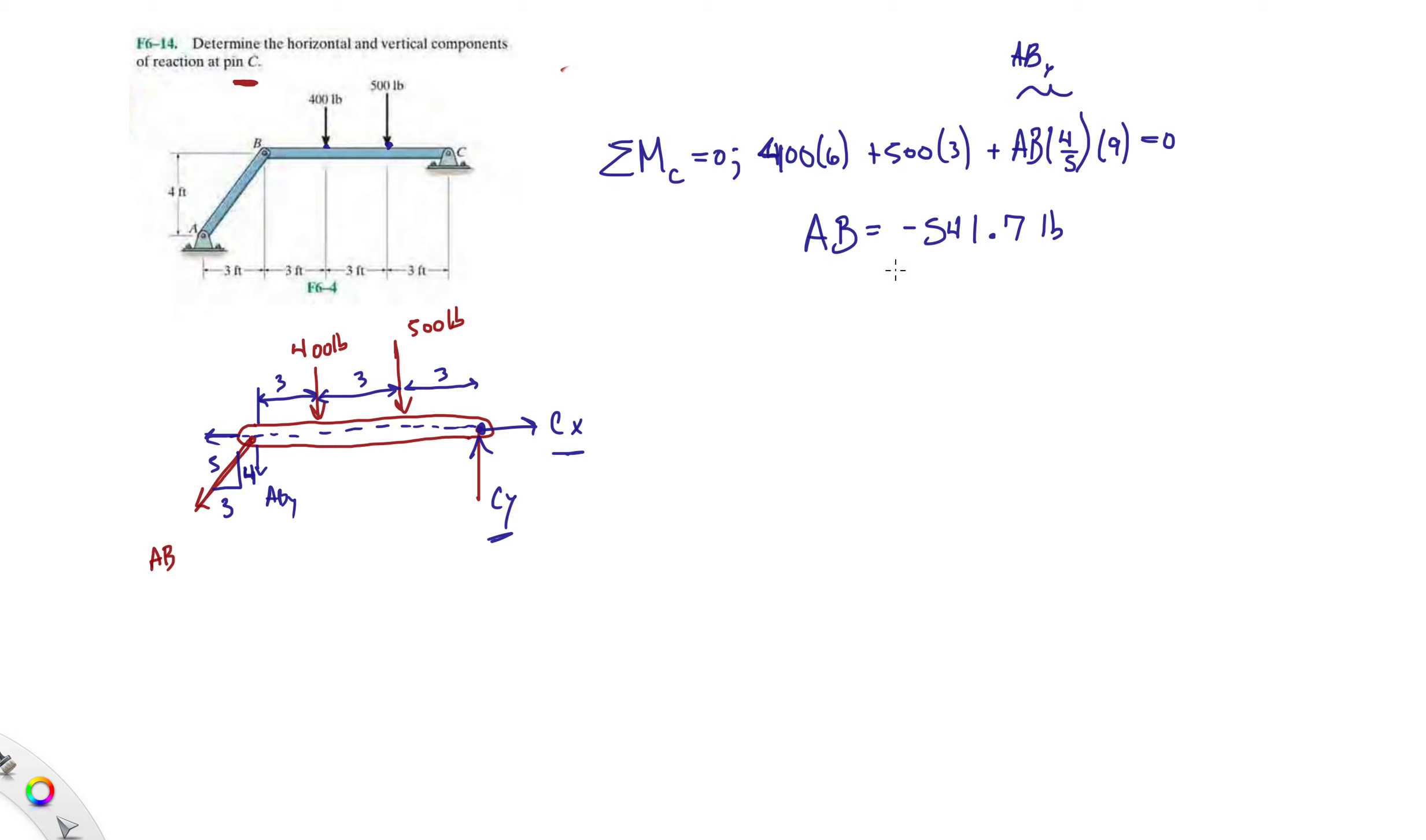You can see if we push down this member on BC, it should be in compression. These are things that as you keep doing these problems you can kind of do a sanity check and assume correctly. What I like to do is switch this and keep everything in the right direction for the next step.